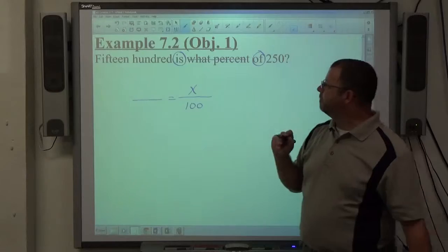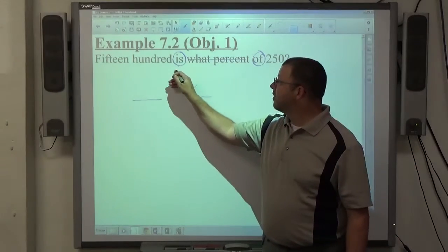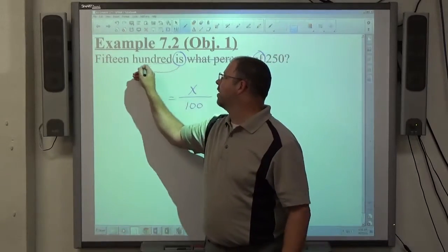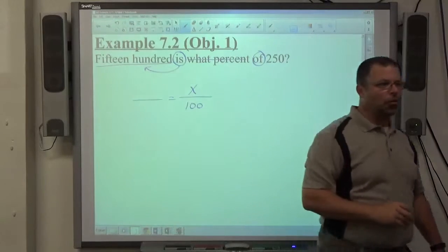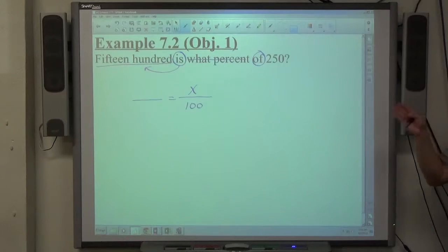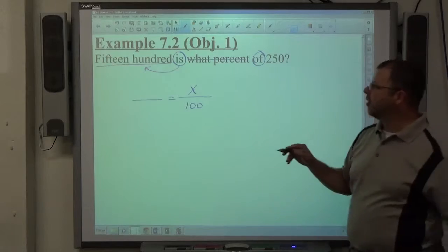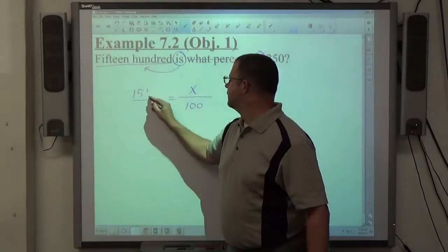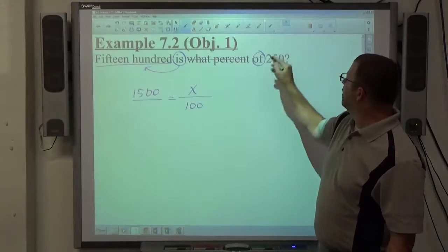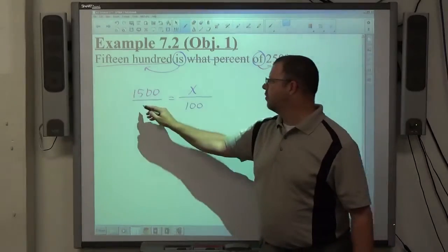Next, next to the word 'is,' is what? 1,500. Be careful when they start spelling out numbers in word form that you get the whole number. I've seen people put 15 on this problem. So 1,500 means 1,500. And 'of' is next to, of course, 250, so 250 goes there.